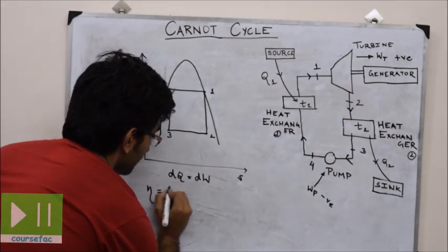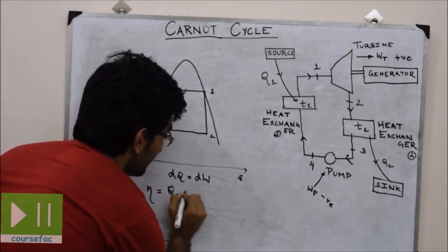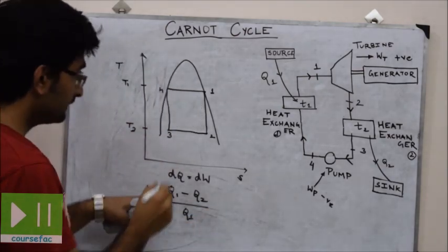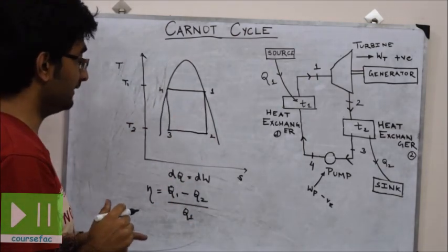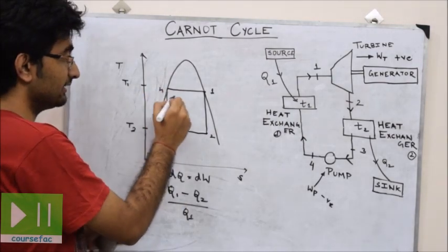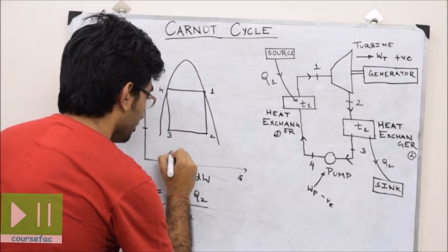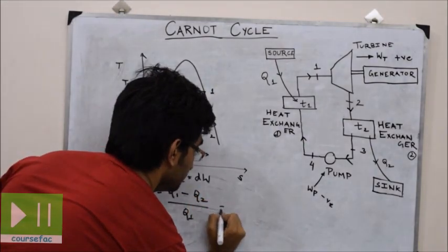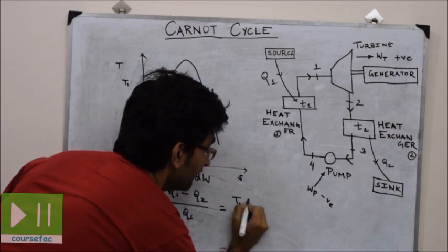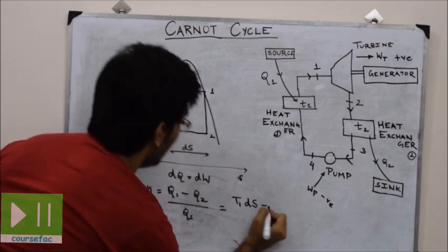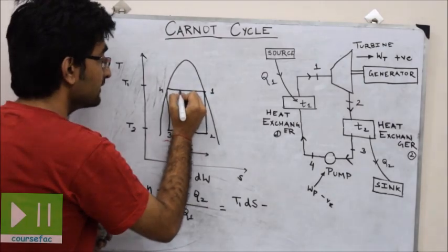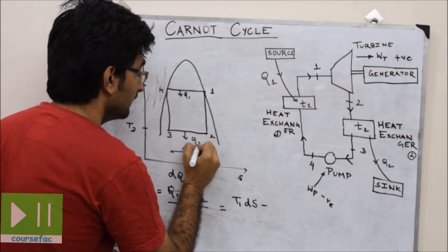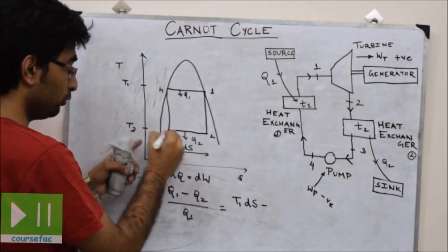Efficiency is equal to (Q1 minus Q2) divided by Q1. Q1 is the heat supplied and Q1 is equal to T1·ΔS. Q2 is the heat rejected, and Q2 is equal to T2·ΔS.